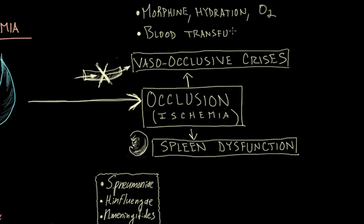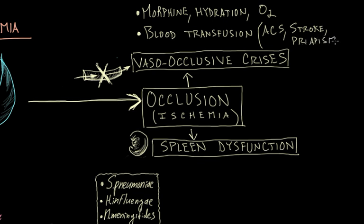Blood transfusion is done only as a last resort. For instance, if the patient comes in with acute chest syndrome, a stroke, or priapism, and does not respond to the initial measures, then a blood transfusion can be considered.